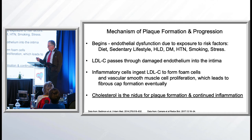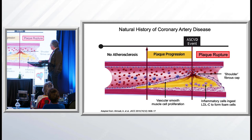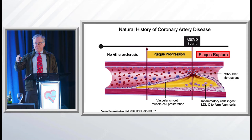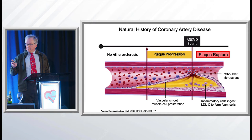Here's a schematic. Over on the left is an artery that's nice and normal. You start to get some plaque buildup, and as that happens, you get vascular smooth muscle cells that proliferate around the plaque. Eventually in a shoulder region — where there's more pressure — it will rupture. And when it ruptures, that's when you have acute coronary syndrome, heart attack, or death.